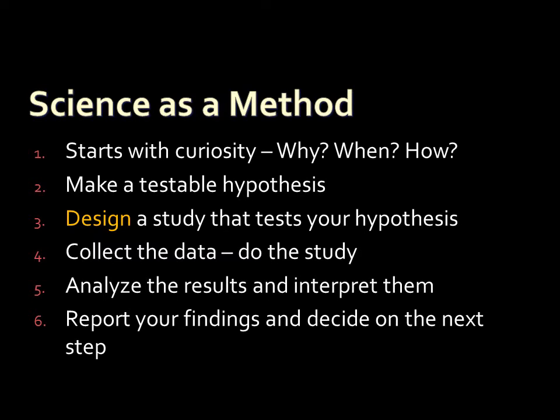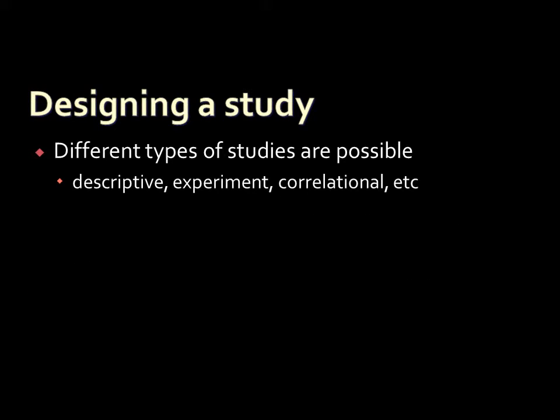Going back to the steps in the scientific method: we've talked about starting with questions and turning those into a testable hypothesis. The next step is selecting the research design that will allow you to test your hypothesis. Psychologists use a variety of different research designs — descriptive studies, experiments, correlational studies, and so on. The task is to find the right research design to fit the hypothesis under study. We'll look at these in more detail shortly.